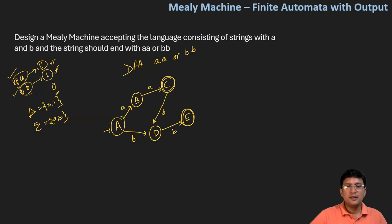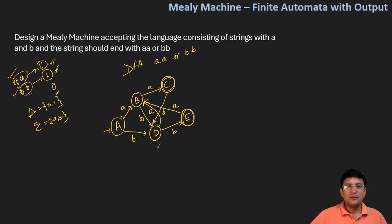If we get another B from state D, we move to state E, which says the string is ending with BB. Similarly, if we are at state E and A comes, we should move to state B, which means after this A, another A can come and we will move to the final state. If we get B in state B, it means we got one B — we may get another B at state D and reach state E. If we get A at state D, it means we have one A, and if another A comes, we move to state C, which is the final state. So this is the DFA we have designed.